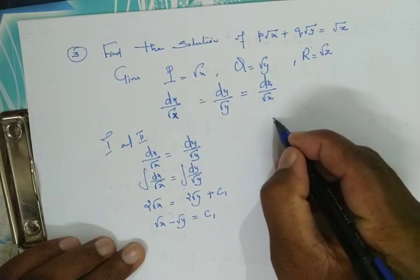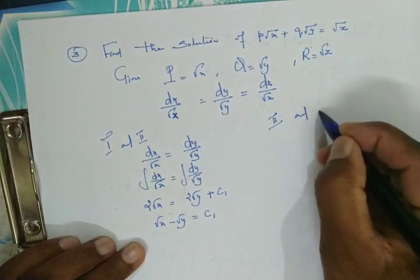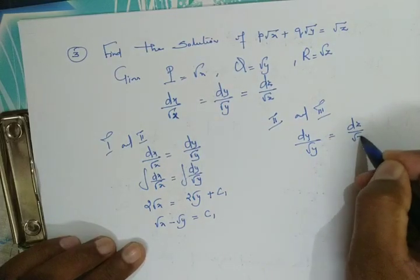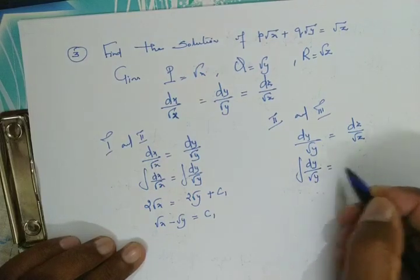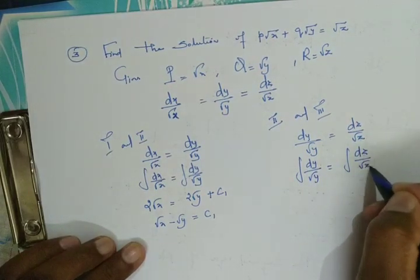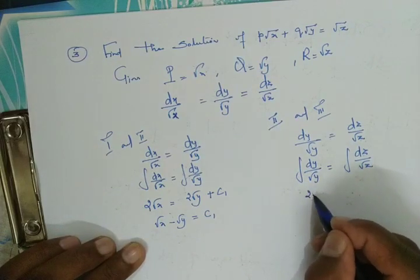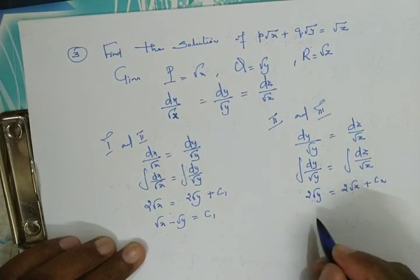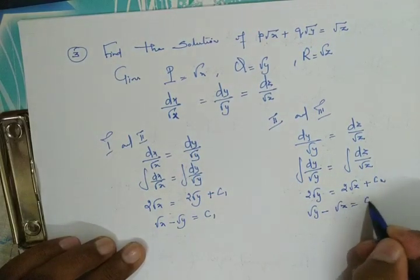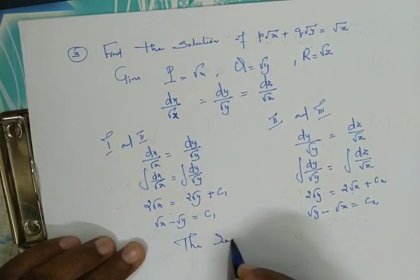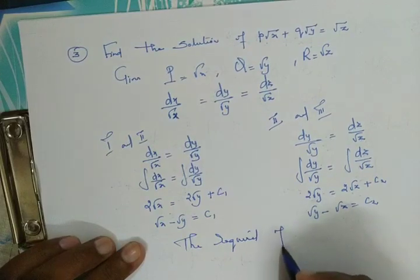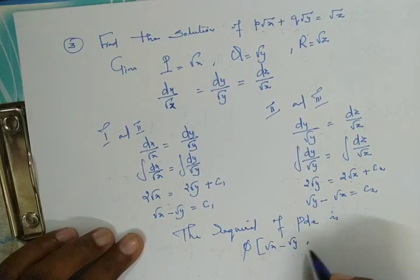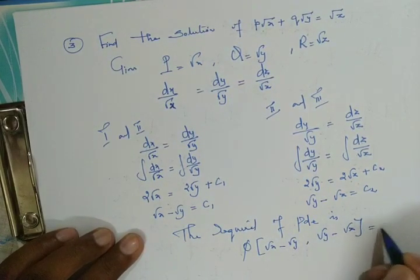Considering the second and third fractions: dy/√y = dz/√z. Integrating both sides, 2√y = 2√z + c₂. Cancelling 2 from both sides gives √y − √z = c₂. The required equation of the PDE is φ(√x − √y, √y − √z) = 0.